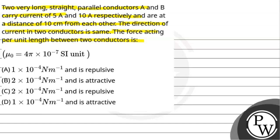So according to the question, we have two long straight parallel conductors A and B. Both carry current in the same direction. The currents are 5 ampere and 10 ampere. Between these two conductors, what will be the force? Let's start with the solution.